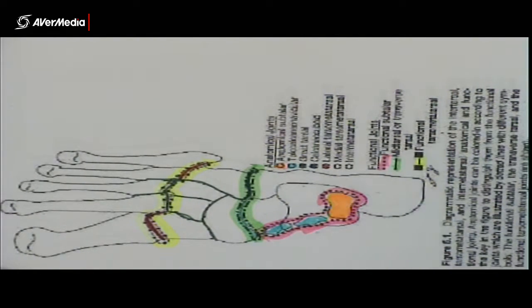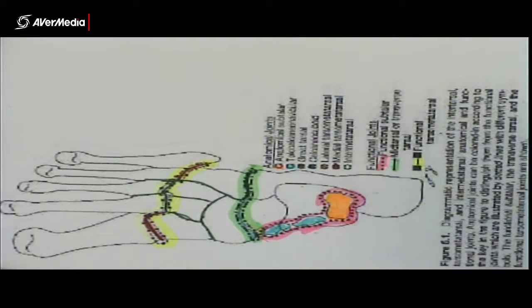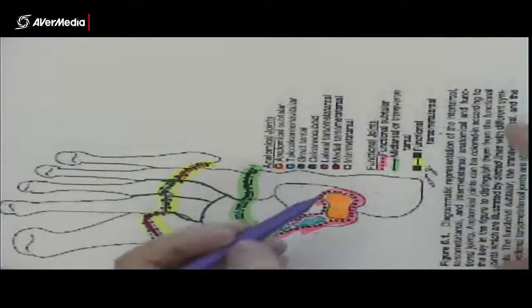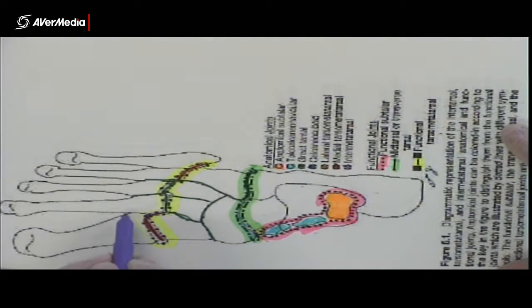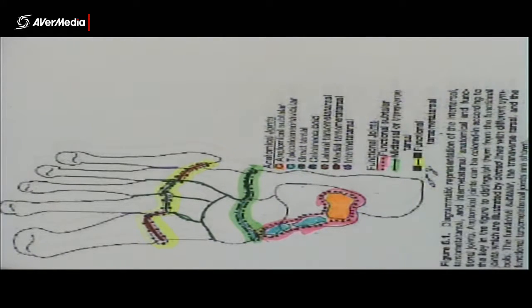And then we have a couple... Oh, I forgot to colour it in, of course. A smart person will colour it in on the key so they know what it means. And then lastly, we've got a couple of inter-metatarsal joints. They're the only ones that are left, these ones. So those are inter-metatarsal joints there between the first and second and the fourth and fifth metatarsal. And that's where the joints of the foot are.